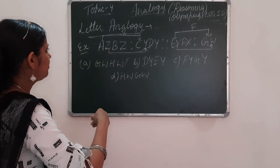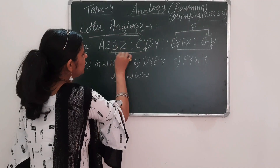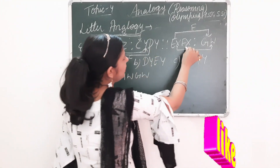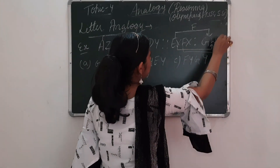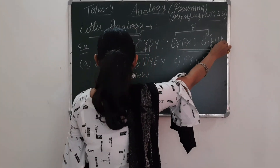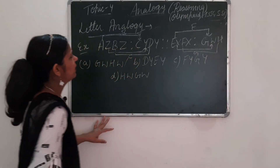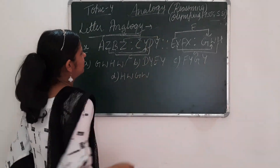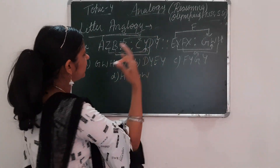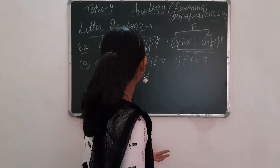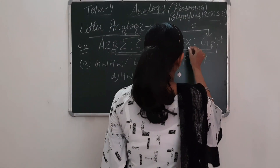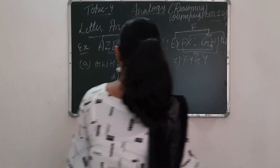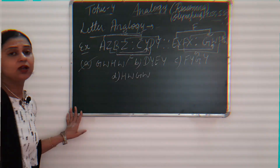Now B, C, D — one letter forward is happening. B → C → D. Similarly F → G → H. Then one letter backward: Z to Y — we wrote Y for Z, one letter backward. So similarly X written one letter backward gives W. Now match: G, W, H, W — G, W is the first.